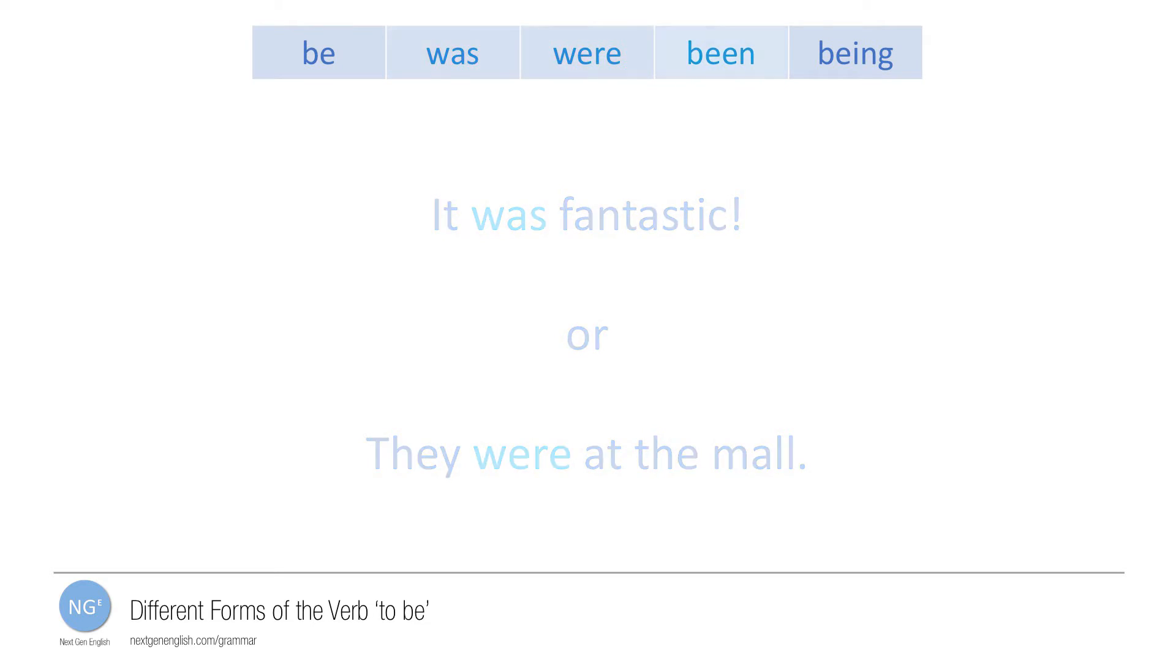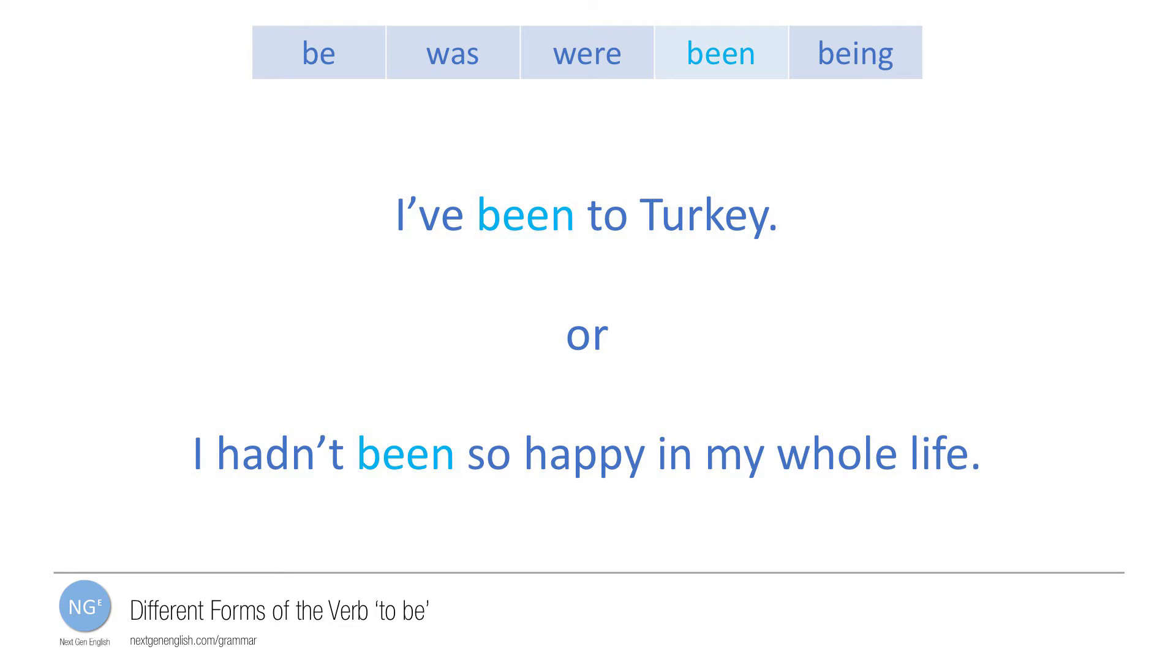We use the form been with have or had in perfect tenses. For example, I've been to Turkey, or I hadn't been so happy in my whole life.